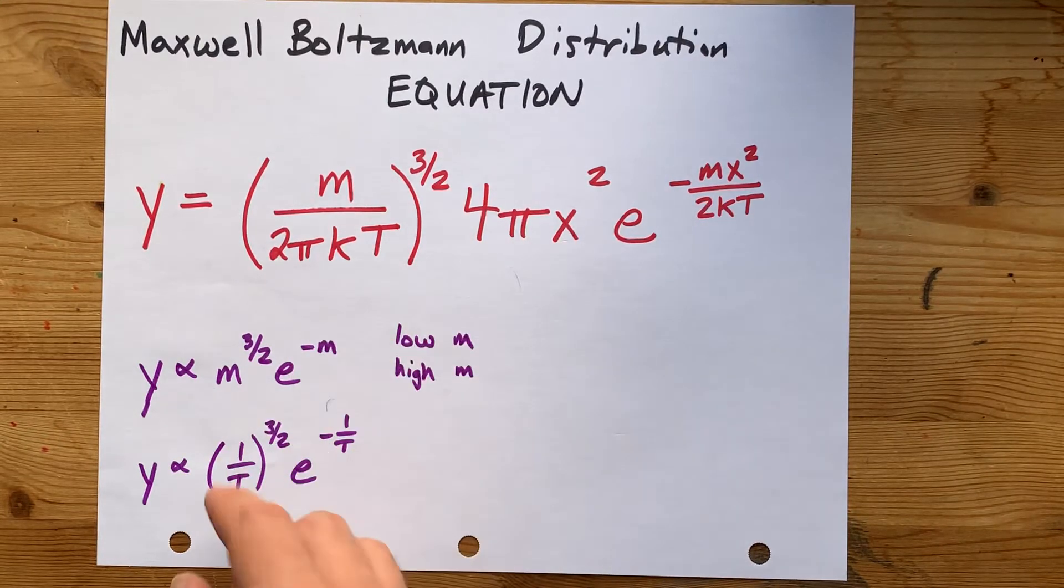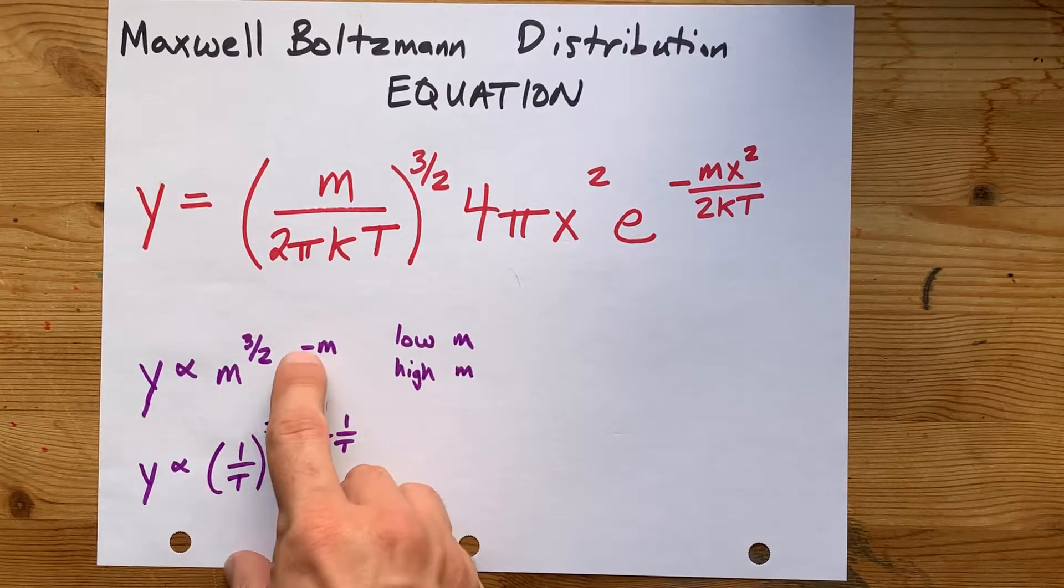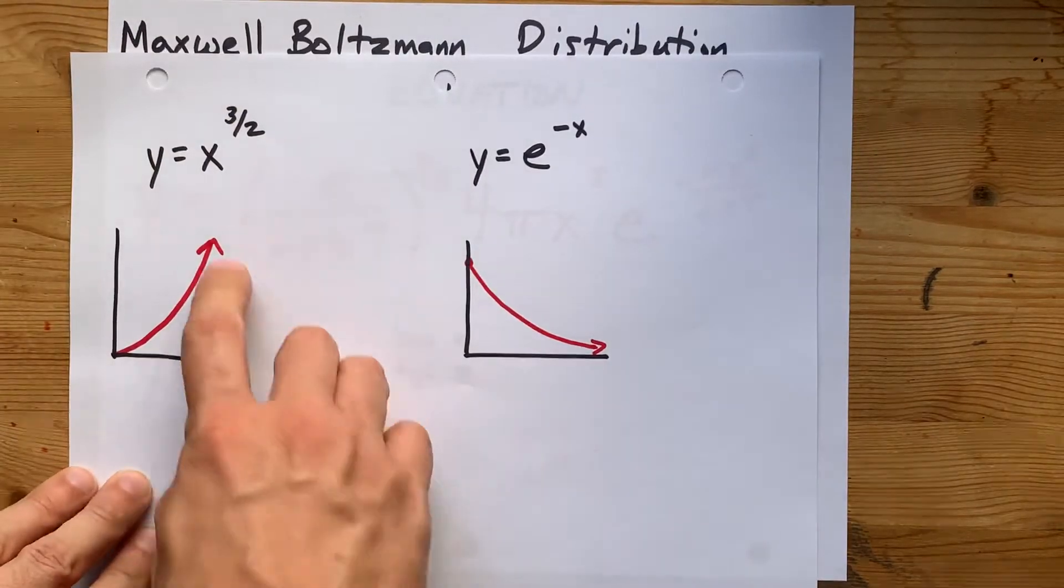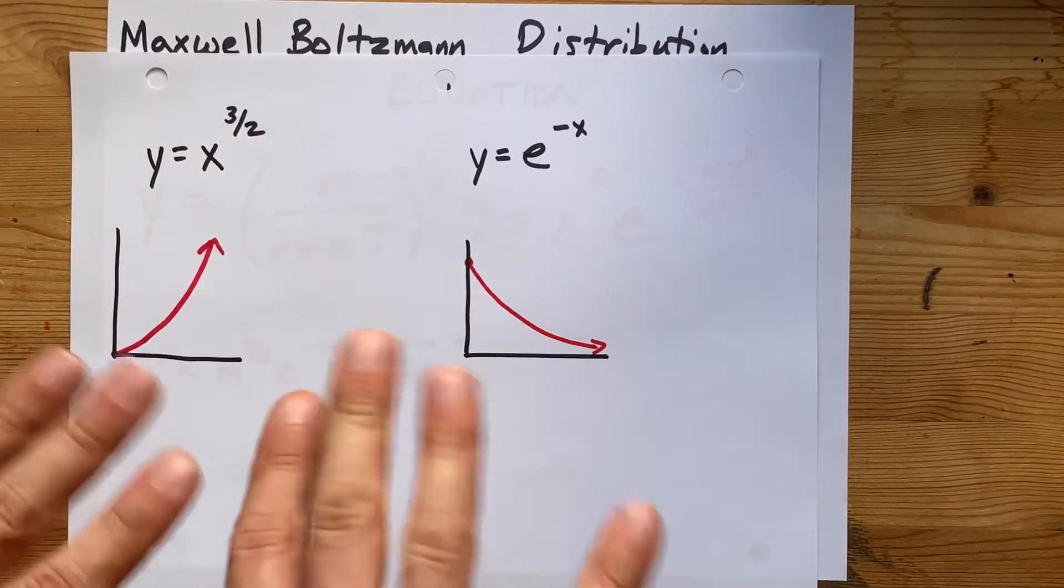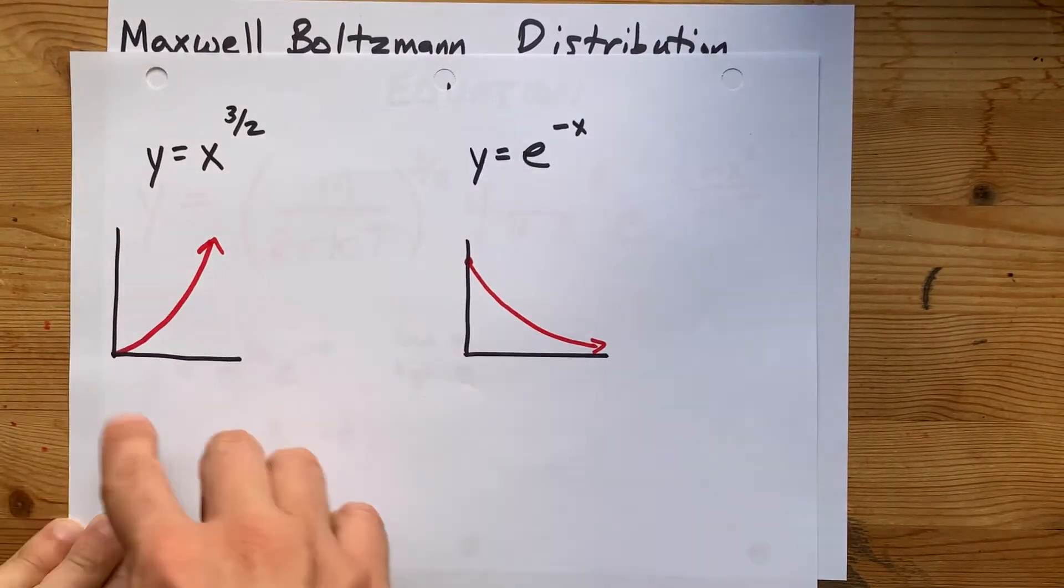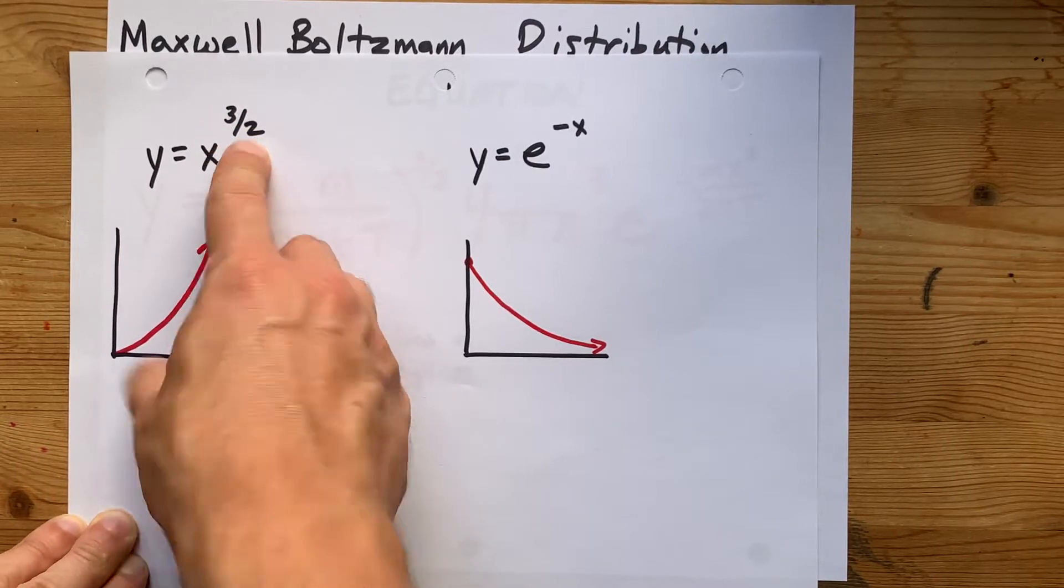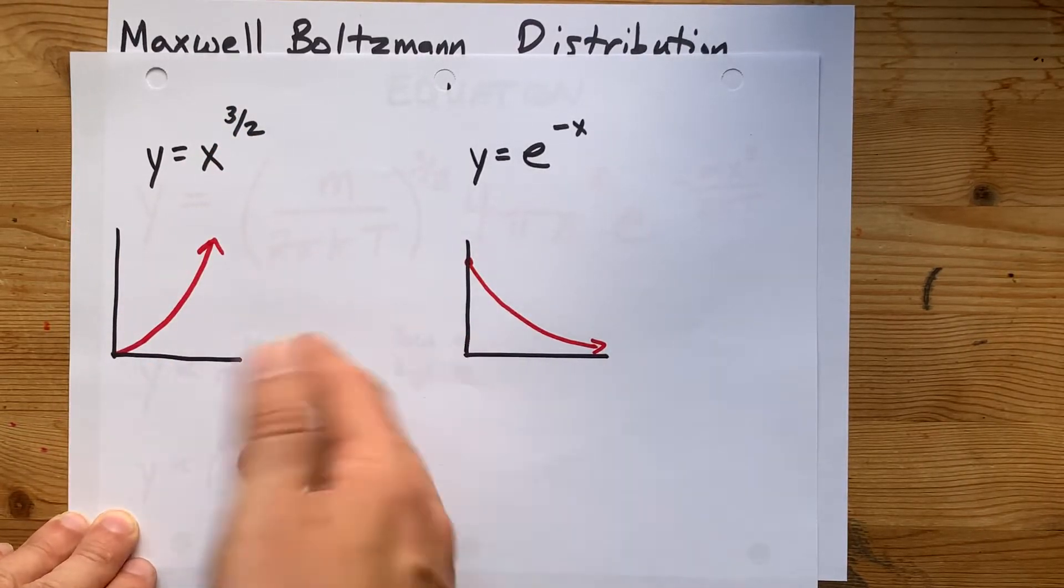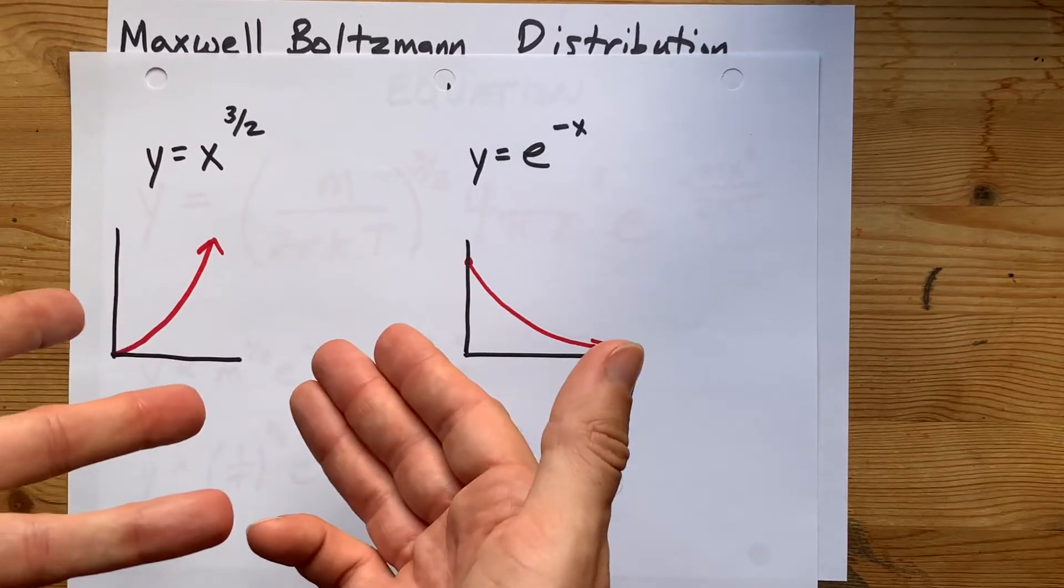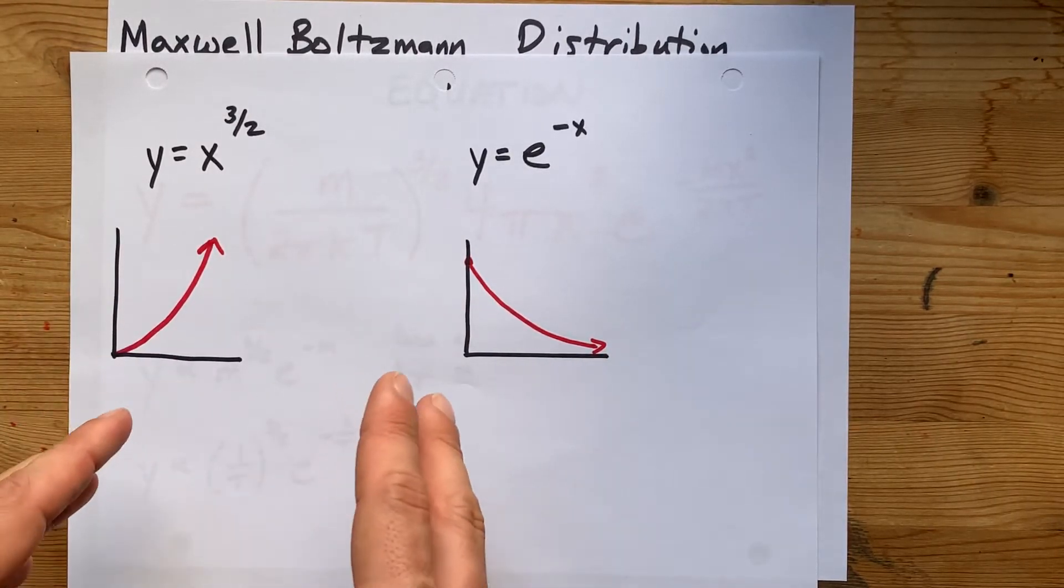Now, math-wise, I want you to see the curves for X to the power of three halves and E to the negative X. X to the three halves is somewhere in between a straight line, Y equals X, and a parabola, Y equals X squared, because this exponent is 1.5, which is between 1 and 2. So I don't know, it kind of looks like a parabola. It's not, but you can think about it that way if you're just trying to get an intuition here.